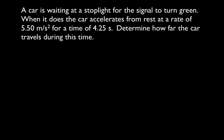Here's the first problem. A car is waiting at a stoplight for the signal to turn green. When it does, the car accelerates from rest at a rate of 5.5 meters per second squared for a time of 4.25 seconds. We want to determine how far the car is going to travel. The most important thing — the first thing you should always do — is write down all five of the variables: initial velocity, final velocity, change in position, acceleration, and time. Write them all down, then fill in what you've been given and what you're trying to solve for.